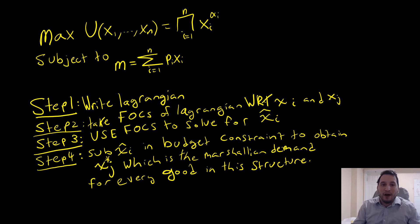Hey guys, what's up? Welcome to this video on solving for the Marshallian demands for N-Good Cobb-Douglas. We have this case here where we're maximizing an N-Good Cobb-Douglas function subject to a standard budget constraint.